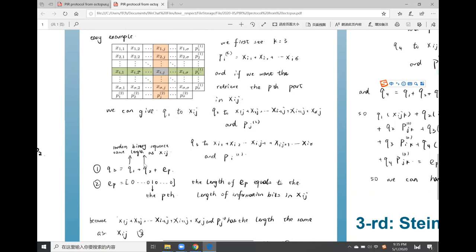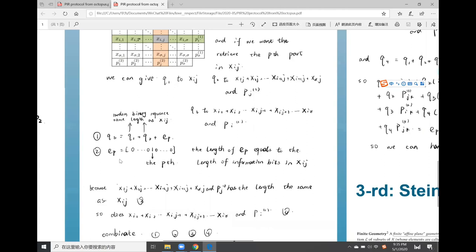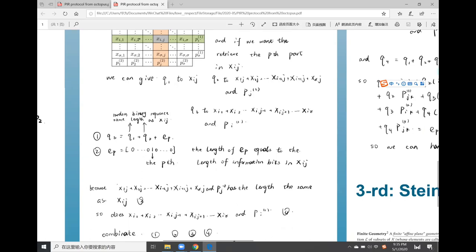And q3 equals q1 plus q2 plus E_p. And E_p is a vector whose p-th position of E_p is 1 and the other positions are all 0s.